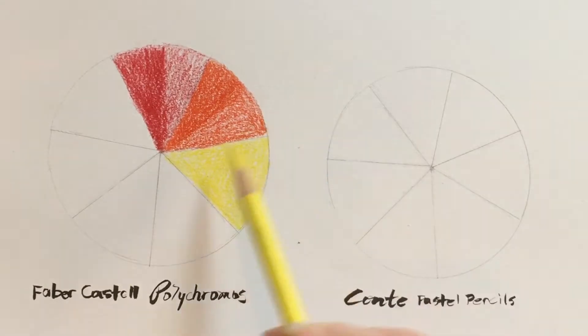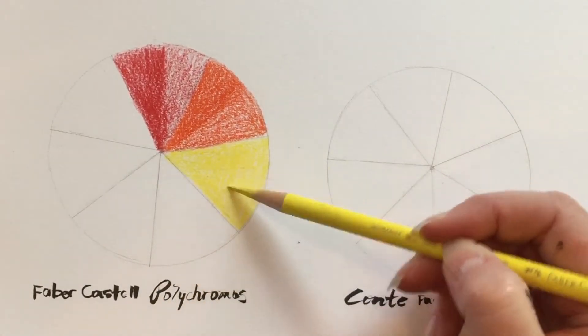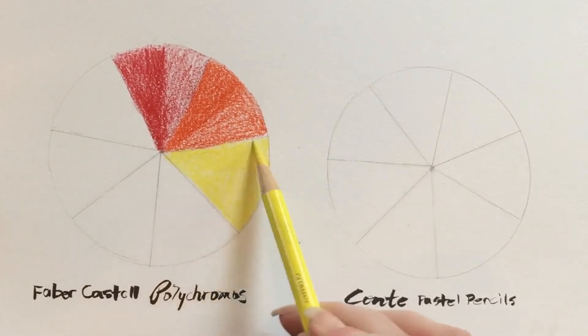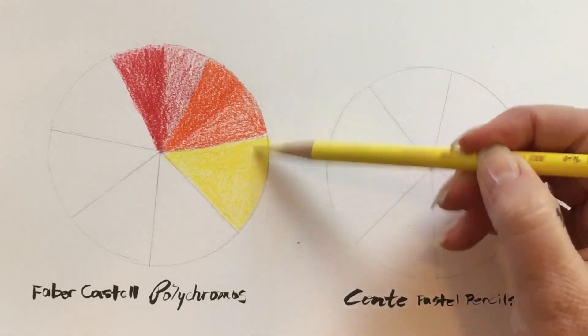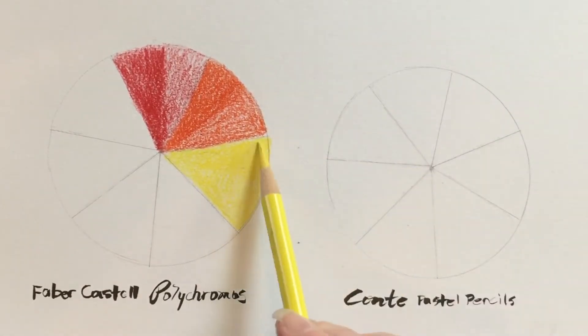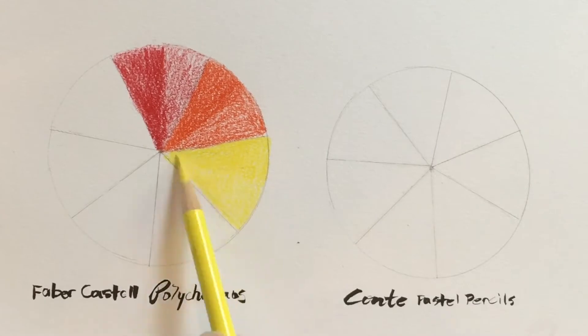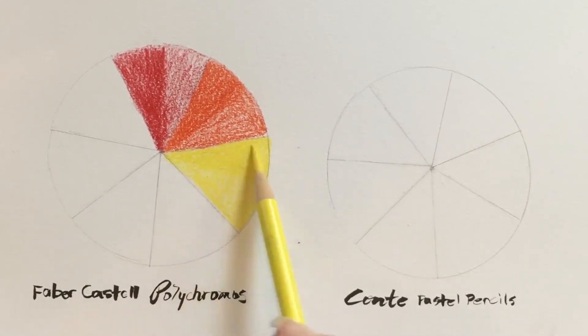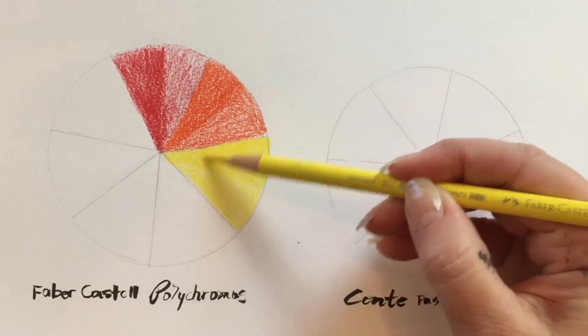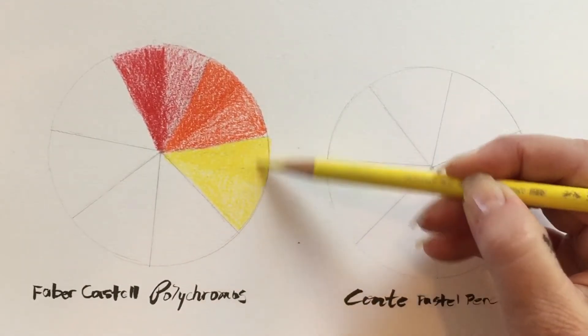I find if you color too quickly with colored pencils, you just saw me go this way and then this way. It can look messy, or if not messy, maybe a little sloppy. It can sort of affect the outcome. I think it's a little bit better if you use oil-based pencils.